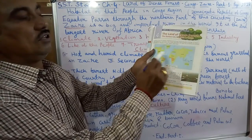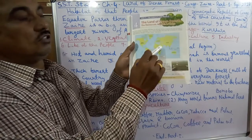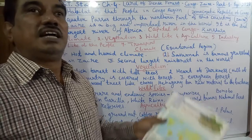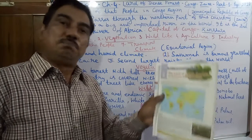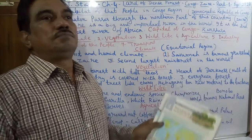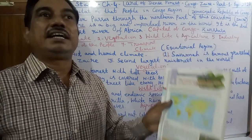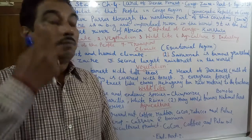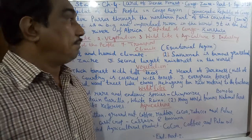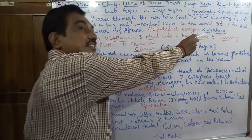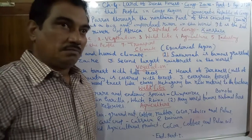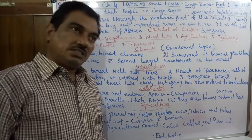The equator passes through the northern part of the country. The Gyre is a big and important river in the world — it is the second largest river of Africa. And the capital of Congo is Kinshasa.